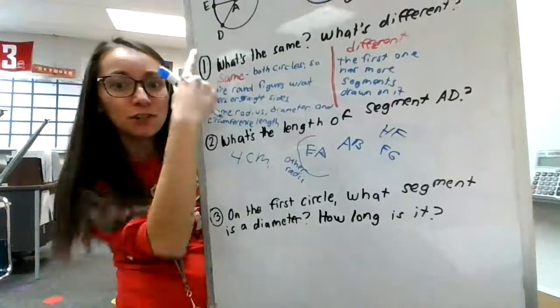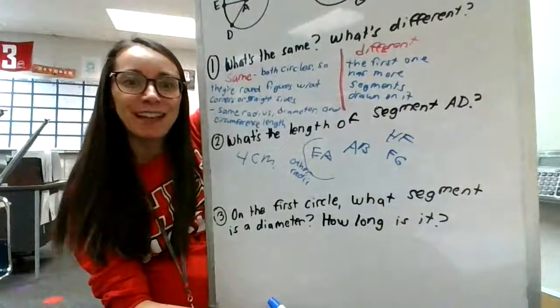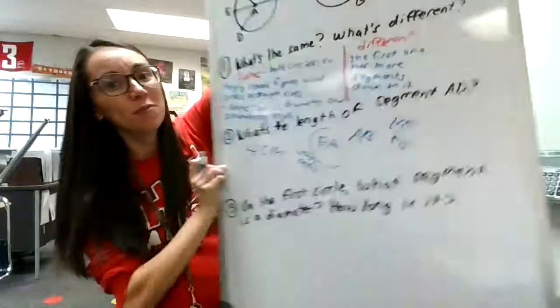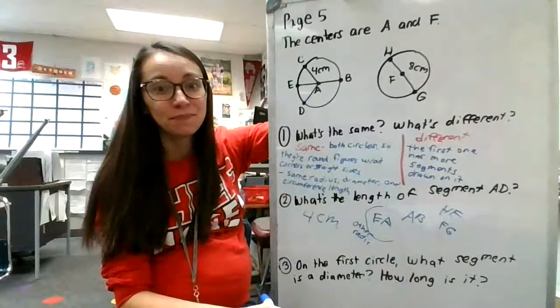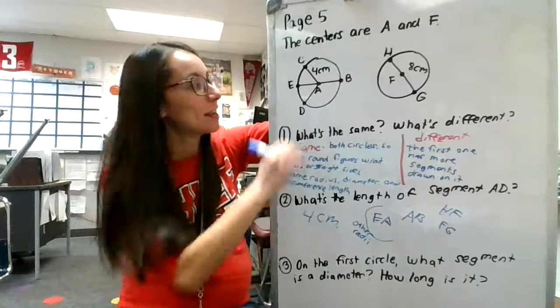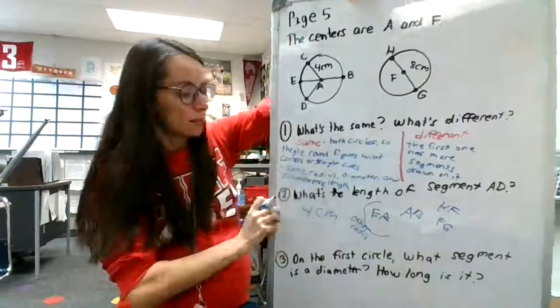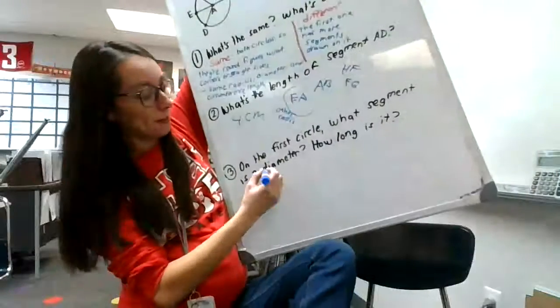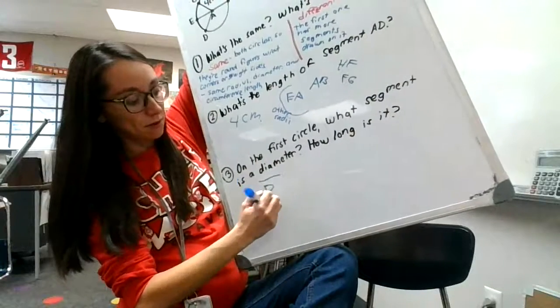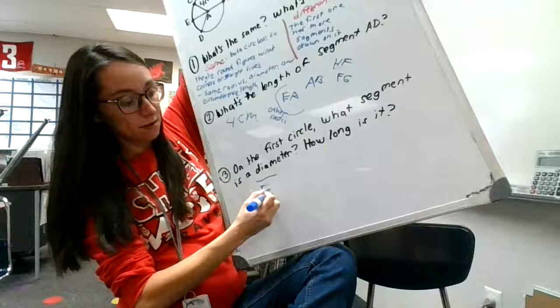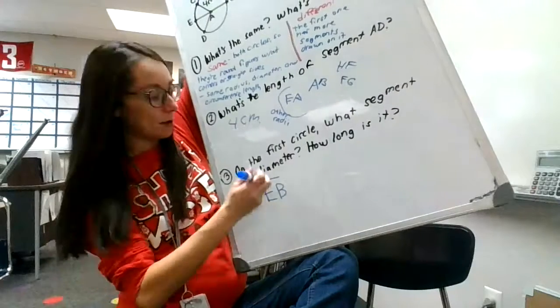Number three, on the first circle, what segment is a diameter? How long is it? So look on there, which one's the diameter? Tell the person next to you. Yeah, you should have said segment EB, or I guess you can call it BE. I don't care. Same thing to me. So segment EB. This means segment when it's written above that. Segment EB is the diameter.